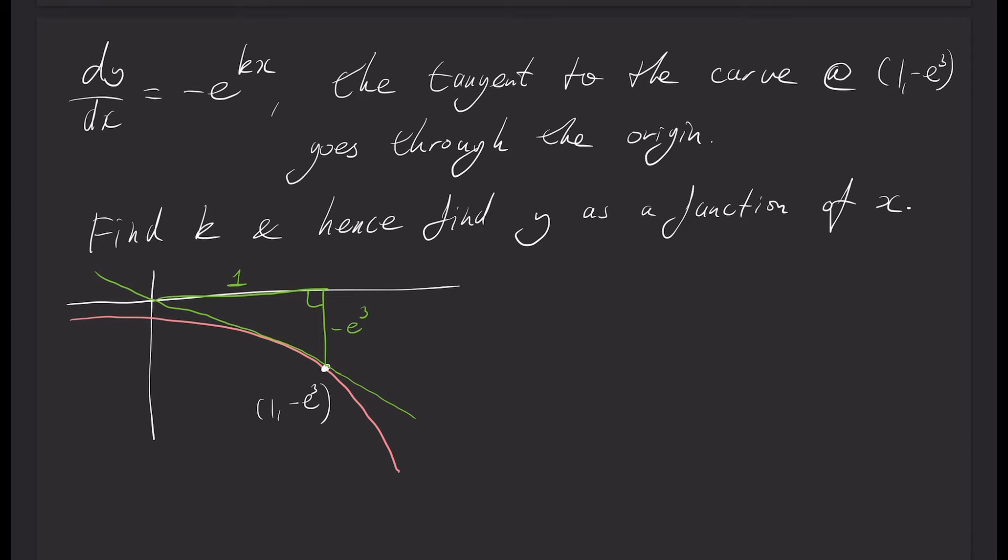So from that I can find the gradient at that point. Now you're going to have to suspend disbelief here a little bit and imagine this is actually a tangent. If you zoom in you'll notice it's not but we're going to agree that that's a tangent. And the tangent which we'll call m is rise over run. So the rise of this line is negative e³ and the run is 1.